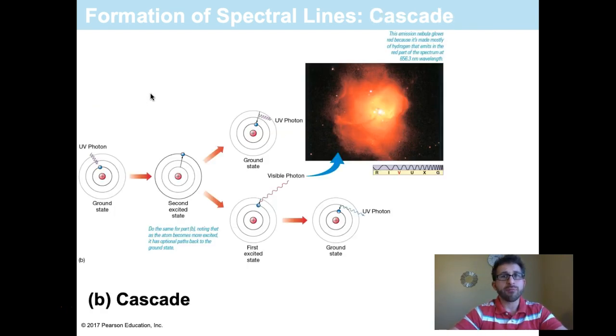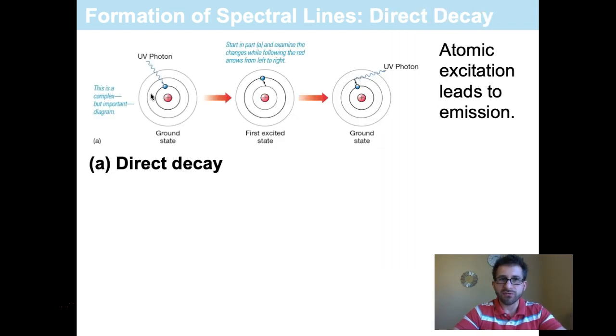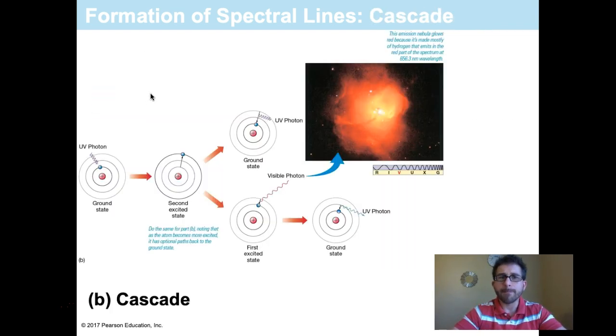A second way of producing a spectral line is through something called a cascade. So this one's a little harder to follow, so I'm going to slow down. It starts off almost identically to the one we just discussed with direct decay, but this time we're going to go a little bit further. So we have a UV photon hits our electron, same thing. It jumps up to an excited state now to the second excited state.